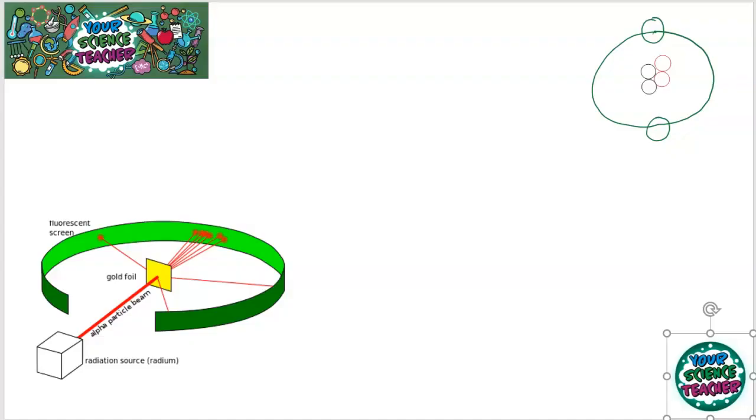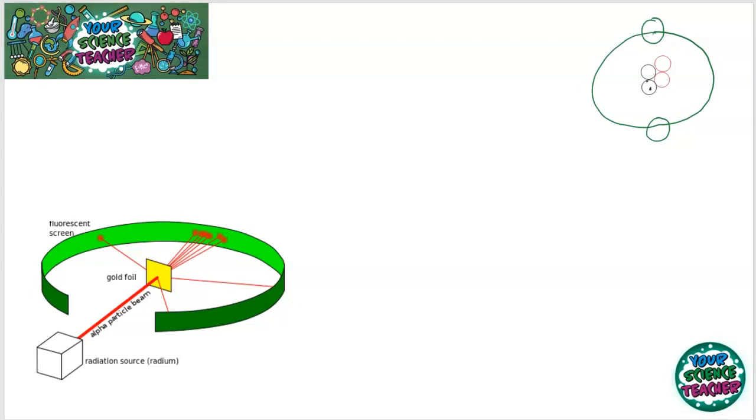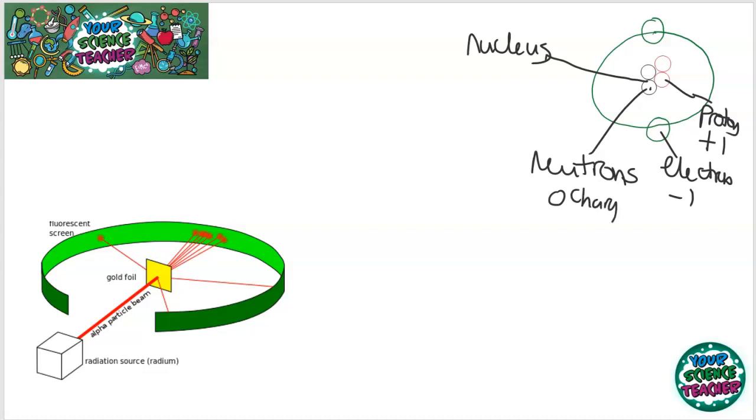To start off the topic of radioactivity we need to start looking at atoms because radioactivity is a property of heavy atoms where they break down uncontrollably. If we go back to our modern theory of the atom we must remember that we have at the centre of our atoms a nucleus with our neutrons, protons and electrons. Remember that the protons are positively charged, the neutrons are neutral charge, and the electrons have a charge of one minus.